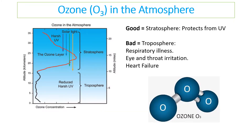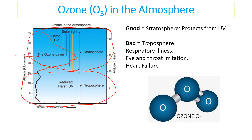First of all, you need to understand that ozone is found in different layers. The bottom layer of the atmosphere is called the troposphere, and higher up we have the stratosphere, and in the stratosphere we have the ozone layer. The ozone layer is where ozone is supposed to be — at that point it is good, it protects us from ultraviolet radiation. But ozone in the troposphere is bad and is causing health issues linked to smog.